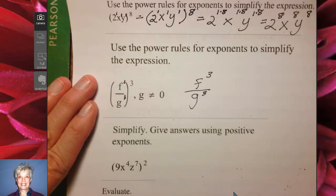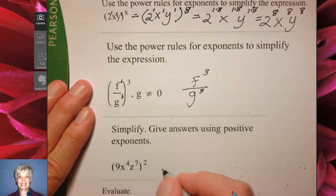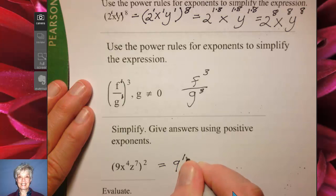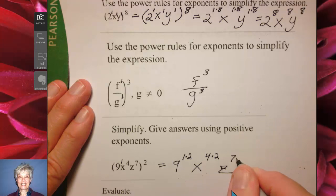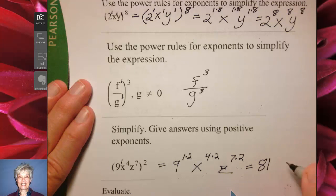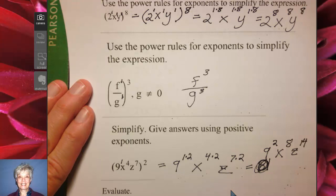Now when you have a problem like this, it's very much like the previous problem. We're going to have 9 to the 1 times 2 — because there's a 1 there — x to the 4 times 2, z to the 7 times 2. So that will give us 9 to the 2, x to the 8, z to the 14. My math lab probably wants us to write it as 9 to the 2, x to the 8, z to the 14 — though it would likely accept 81 as well.